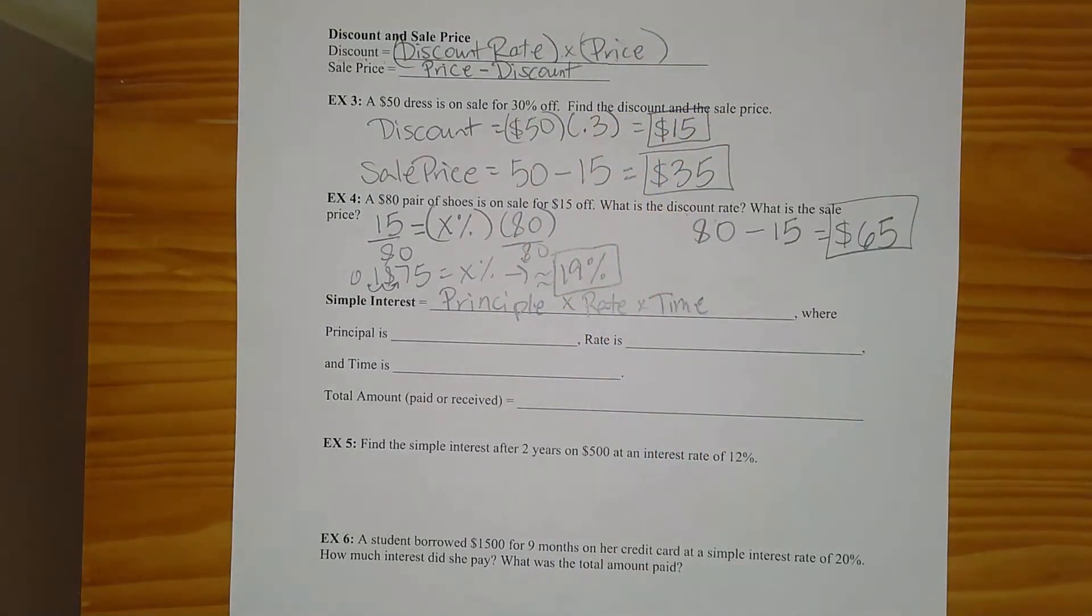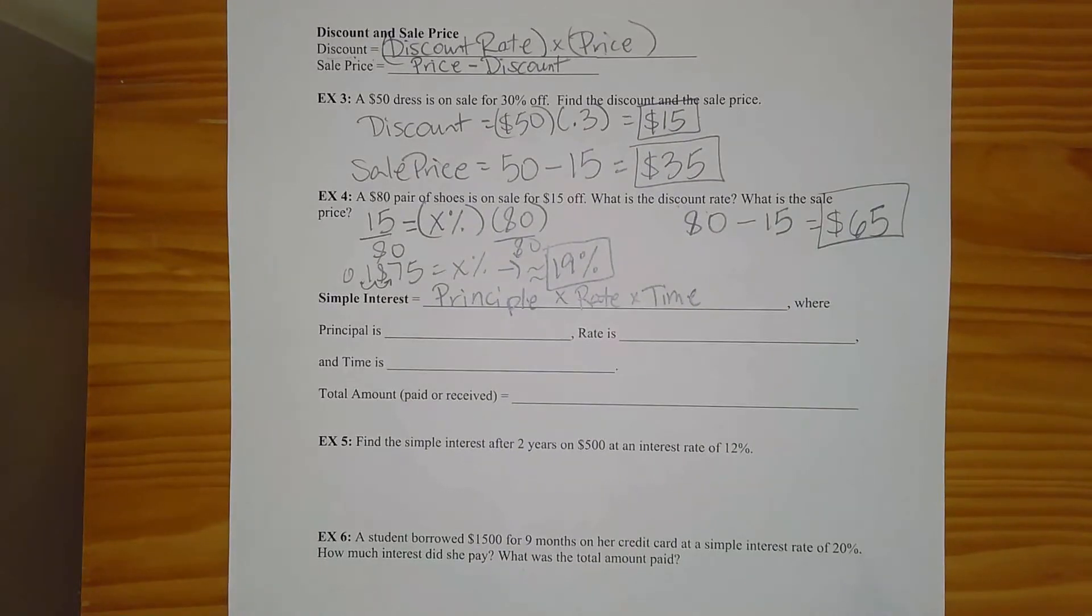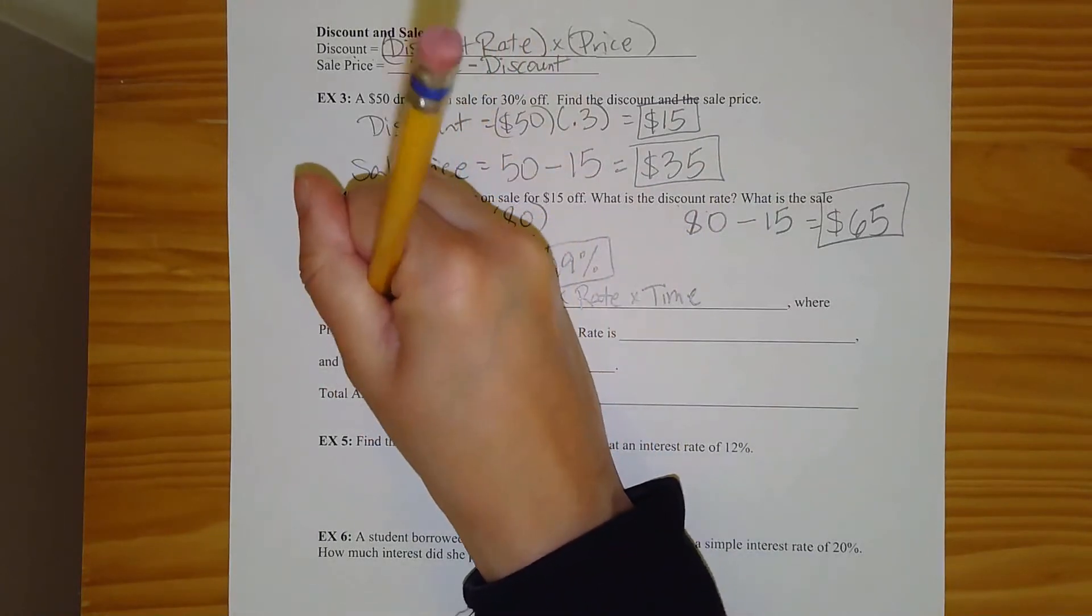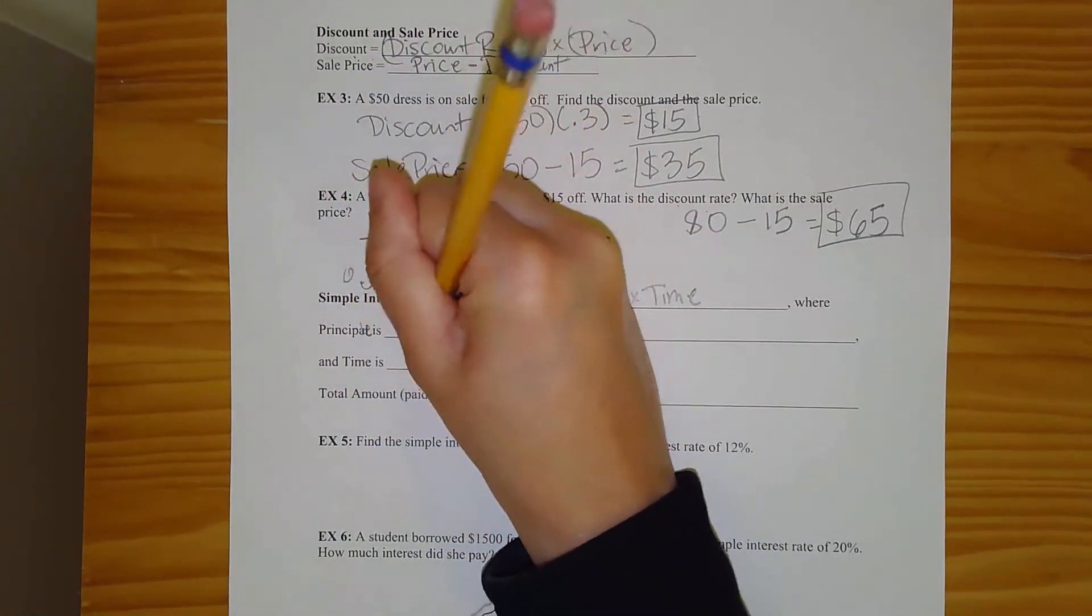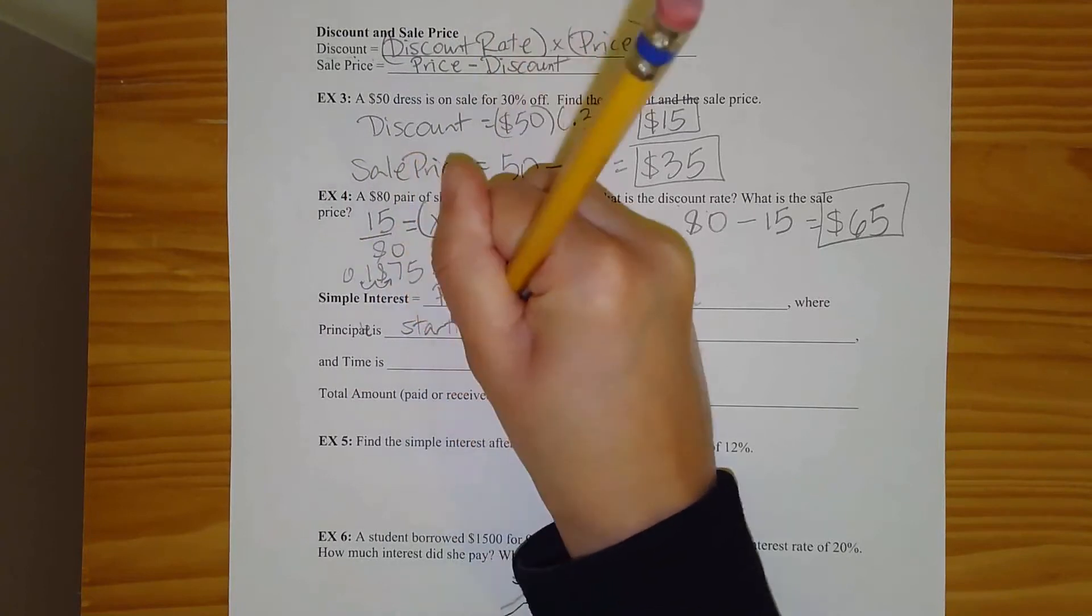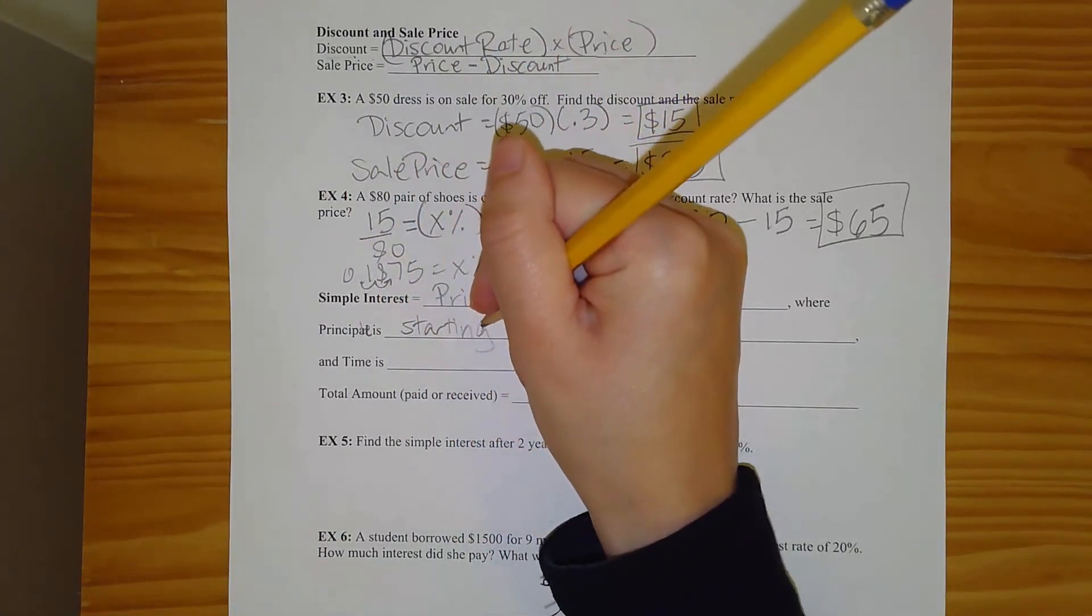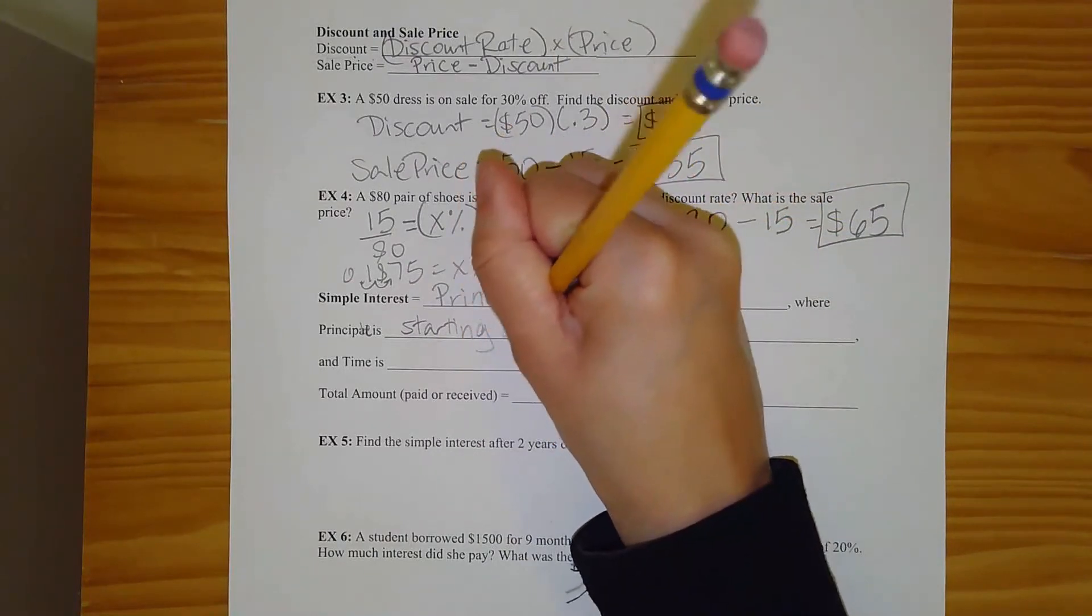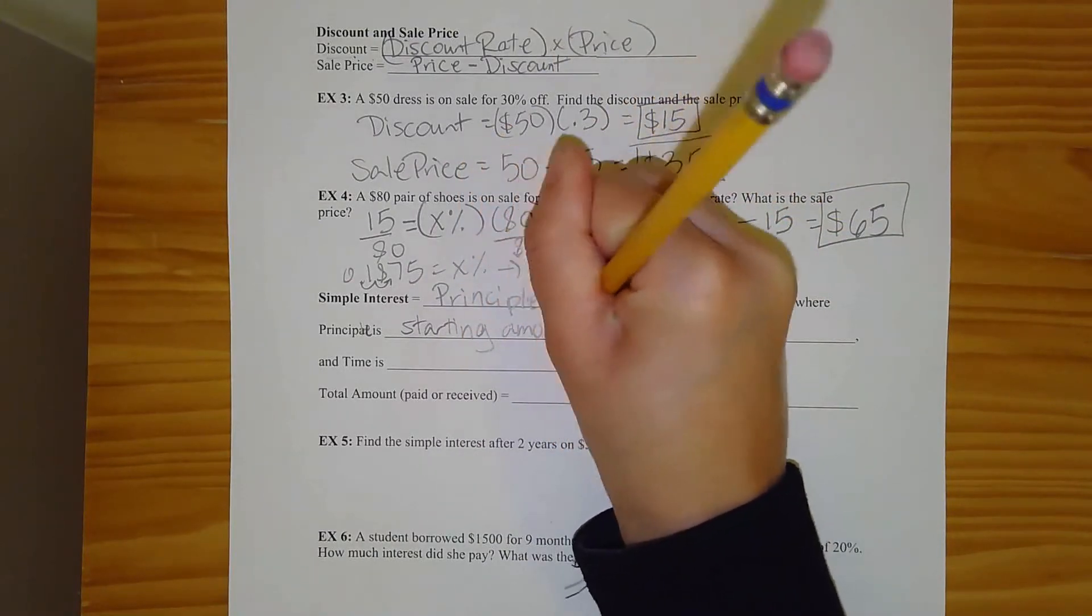Now, this is not like a principal of a school. The principal is another name for the starting amount. So this is the starting amount, whether that's the amount that you put in a bank account or the amount that you take out a loan or the amount that you've charged on the credit card. It's that starting amount.